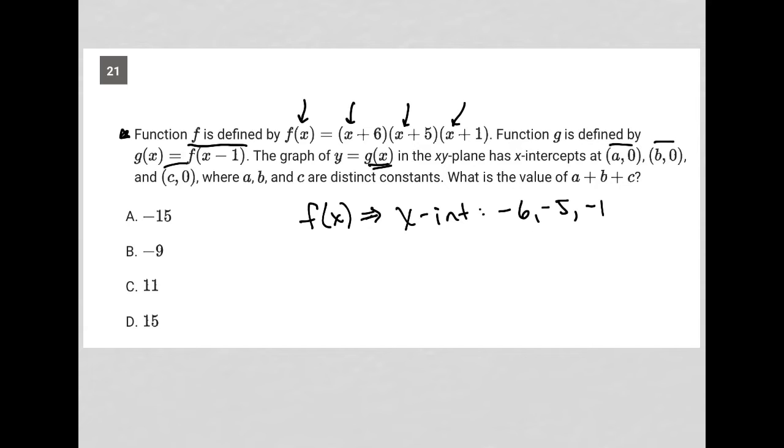Our x-intercepts are always basically the x values where y equals 0. That's the very fundamental definition of an x-intercept. What does x equal when y equals 0?